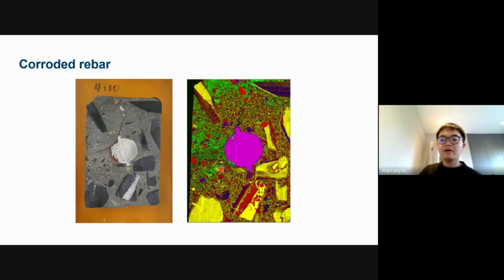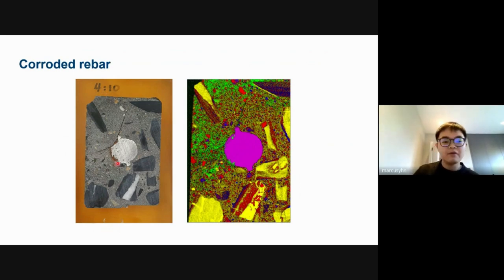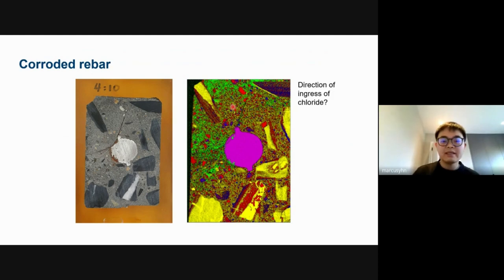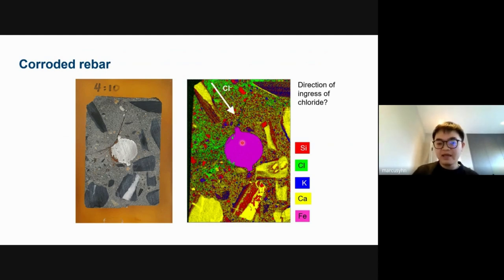Another interesting application of Micro-XRF is forensic investigation of corroded rebar in concrete exposed to chloride. The cross-section of the corroded rebar shows corrosion products formed around the rebar causing the concrete to crack. The corresponding composite elemental image obtained with Micro-XRF clearly shows the direction of chloride ingress — the green pixels representing chloride ions reveal exactly where and how chloride has penetrated the concrete. This demonstrates how powerful Micro-XRF can be, especially for forensic investigation of an unknown concrete sample.